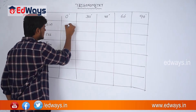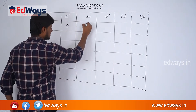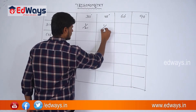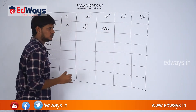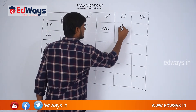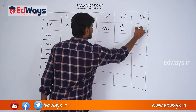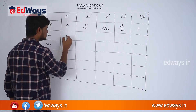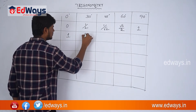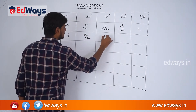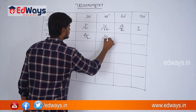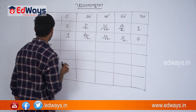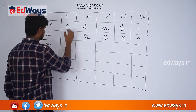Sin 0° is 0, sin 30° is 1/2, sin 45° is 1/√2, sin 60° is √3/2, and sin 90° is 1. For cos: cos 0° is 1, cos 30° is √3/2, cos 45° is 1/√2, cos 60° is 1/2, and cos 90° is 0. Then tan 0° is 0.